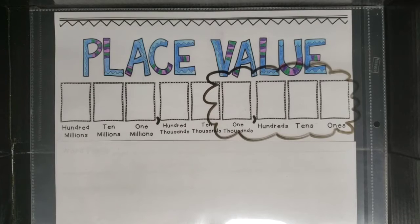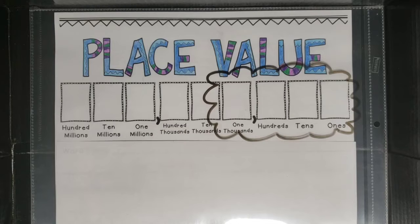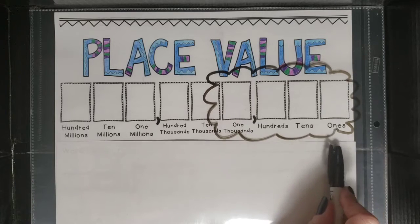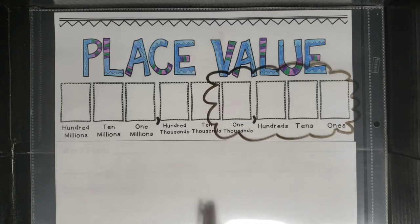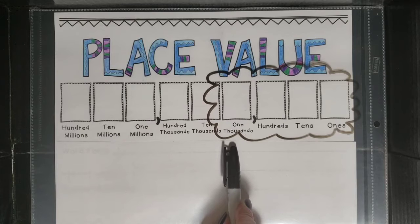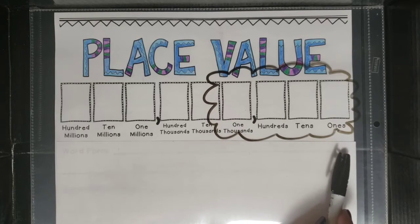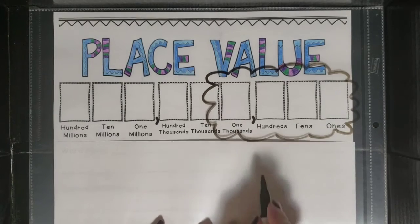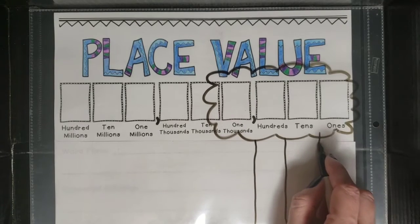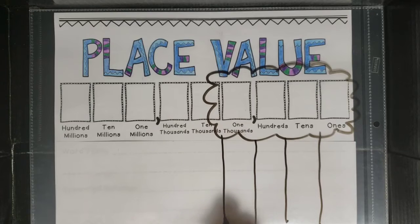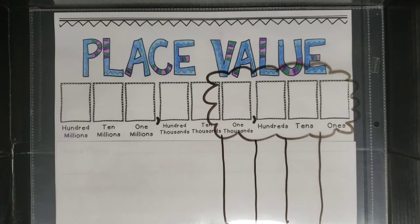Let's start with something simple. The method I'm going to show you today will work for any set of place values. However, for this activity today we are only going to work with the ones, tens, hundreds, and thousands. To best follow along, I recommend that you write thousands, hundreds, tens, and ones across the top of your paper and then draw lines to create columns down your paper. Pause the video to complete this task and then we will get started.